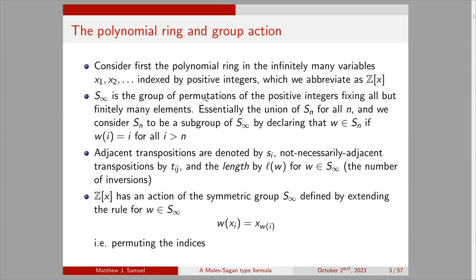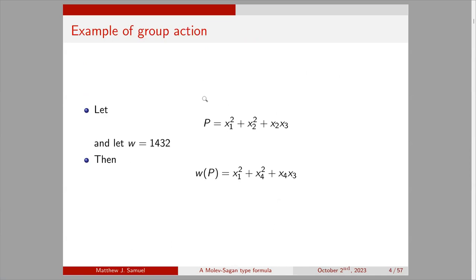The adjacent transpositions are denoted by s_i — these exchange i and i+1. Other transpositions, not necessarily adjacent, are denoted by T_{ij}, exchanging i and j. The length of a permutation w in S_infinity is denoted L(w), which is the number of inversions, or equivalently the length of a reduced expression. We consider an action of S_infinity on Z[x] that permutes the indices: applying w to x_i gives x_{w(i)}.